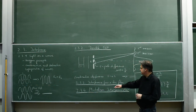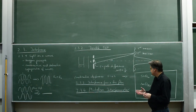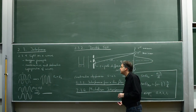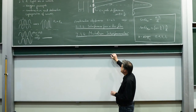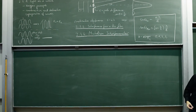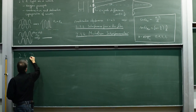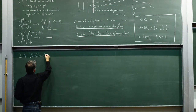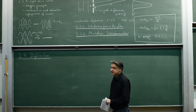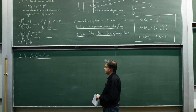In the last lecture we also discussed interference from a thin film and the Michelson interferometer — please look those up in the previous video. Today's chapter is the single slit, which is something different. We already note that for the double slit we use the name interference, and for the single slit we use the keyword diffraction.